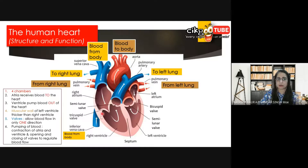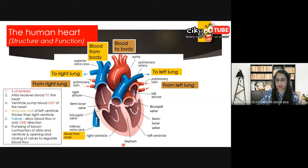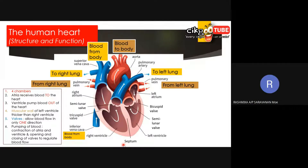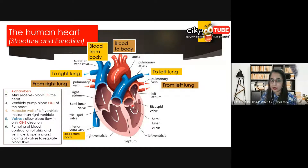Right ventricle muscles are thinner than the left part. So why does the left ventricle have a thicker wall than the right ventricle? It's because in the left ventricle the pressure is higher. Yes, that is correct.